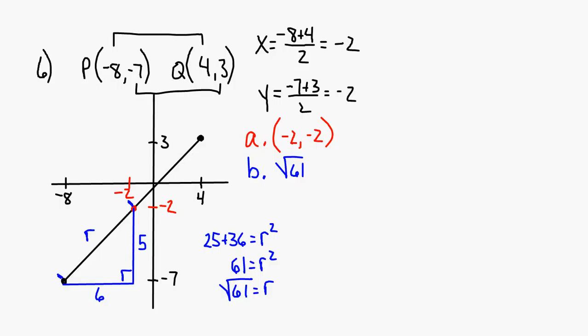Part C: write an equation for the circle. The equation is x plus 2 squared plus y plus 2 squared equals 61, because r squared is 61. Any questions on that three-step problem? It's the first time you've done one where you've just been given the coordinates of the diameter.